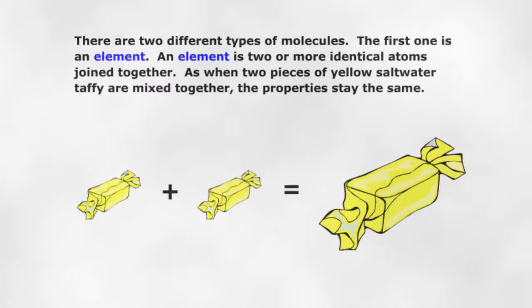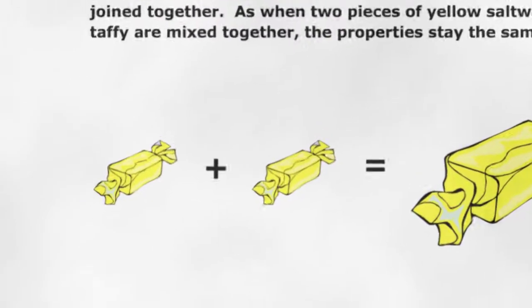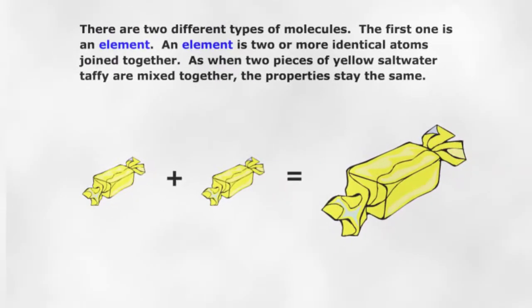There are two different types of molecules. The first one is an element. An element is two or more identical atoms joined together. As when two pieces of yellow saltwater taffy are mixed together, the properties stay the same.